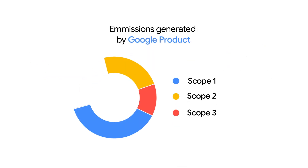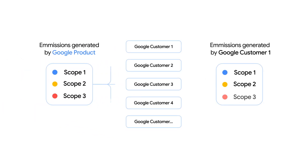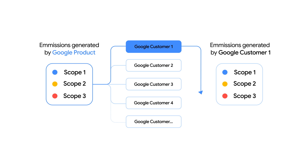Google shares customer-specific estimates of our emissions to give more precise reporting insights to our users. You can choose to include all of these as your Scope 3 emissions.